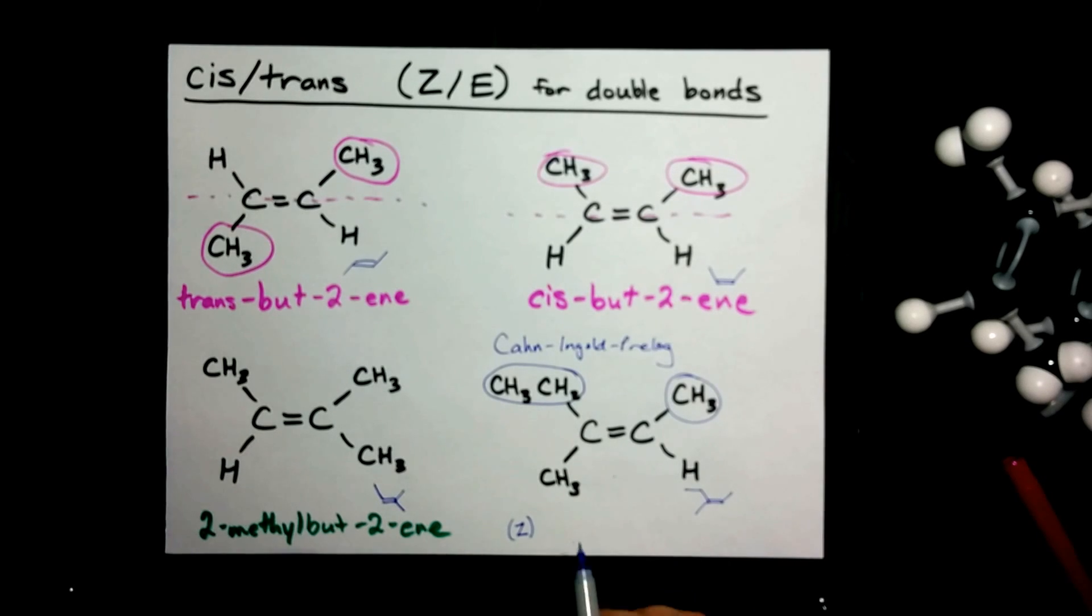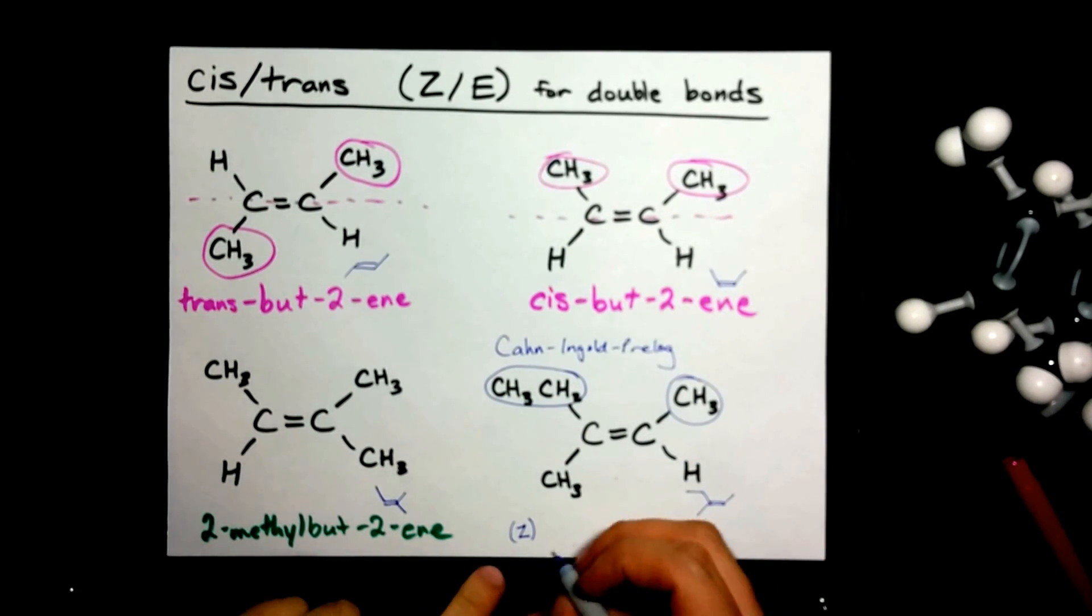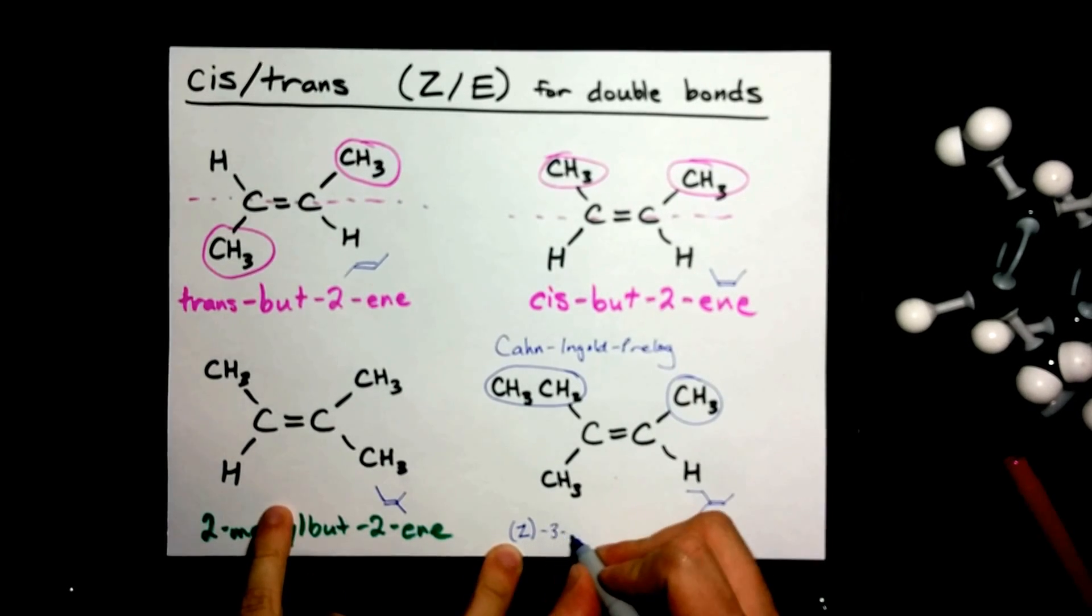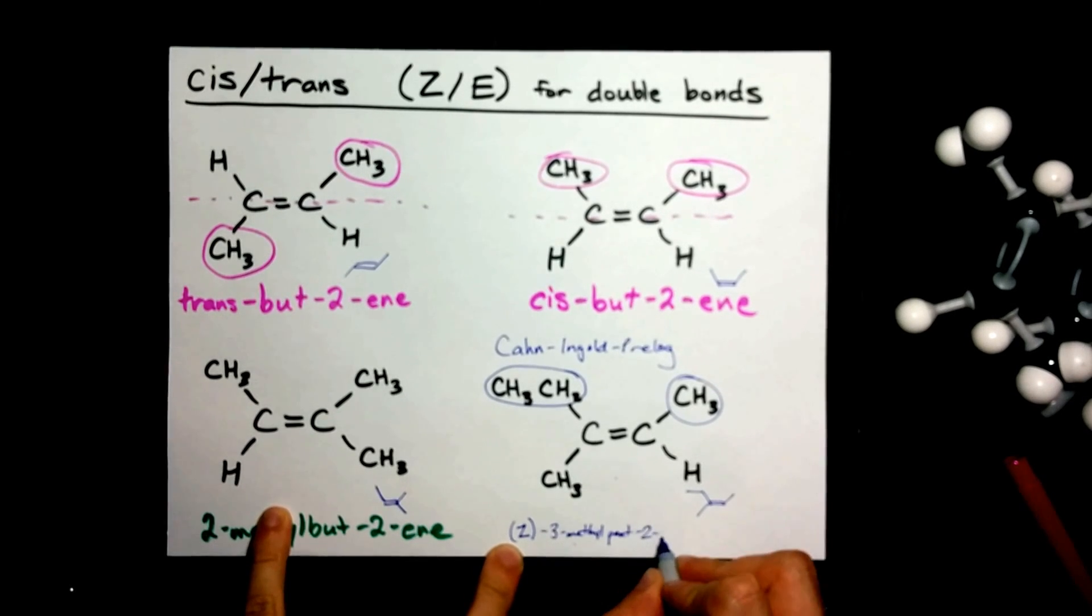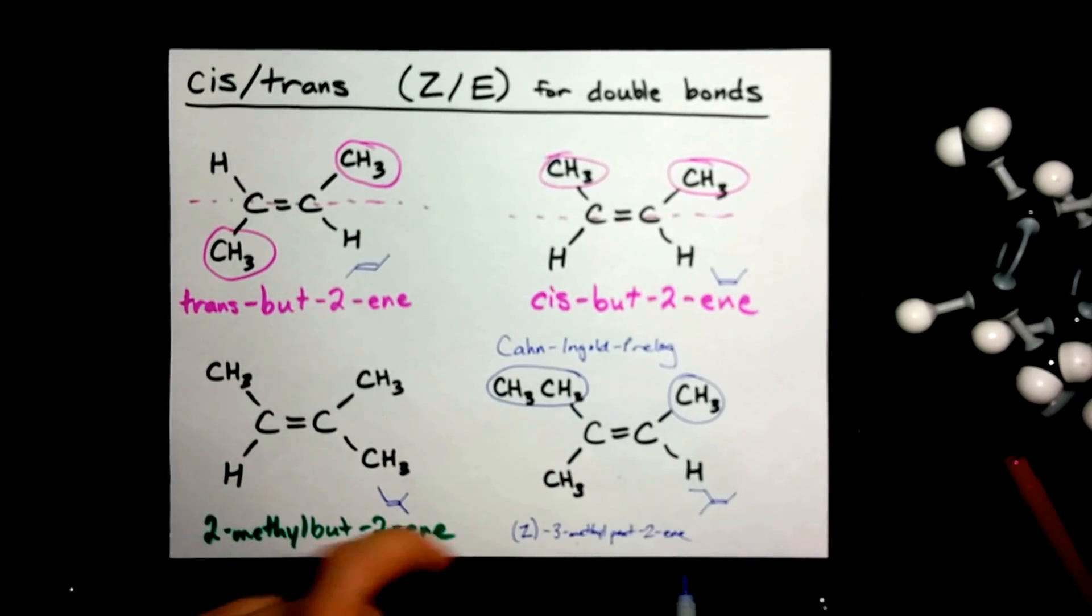I'll name this for you while I'm here. It looks like we got a 1, 2, 3, 4, 5 carbon chain with a methyl group sticking off here. So this is 3-methyl-pent-2-ene. And because there's only one double bond, everyone knows that this Z applies to that too. Okay?